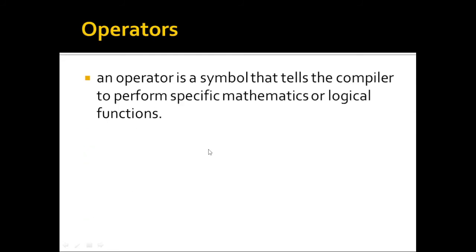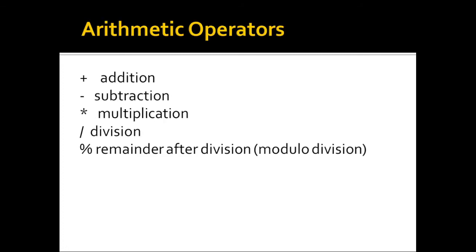An operator is a symbol that tells the compiler to perform specific mathematical or logical functions. Arithmetic operators include: + for addition, - for subtraction, * for multiplication, / for division, and % for modulus. In C, just like other languages, there is a hierarchy in resolving mathematical expressions: expressions in parentheses are resolved first, then multiplication and division (and remainder at the same level), then addition and subtraction.